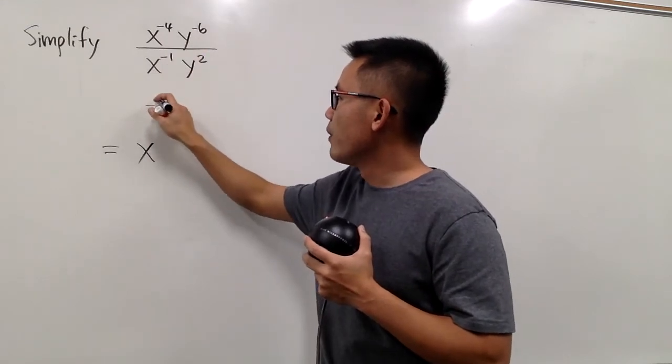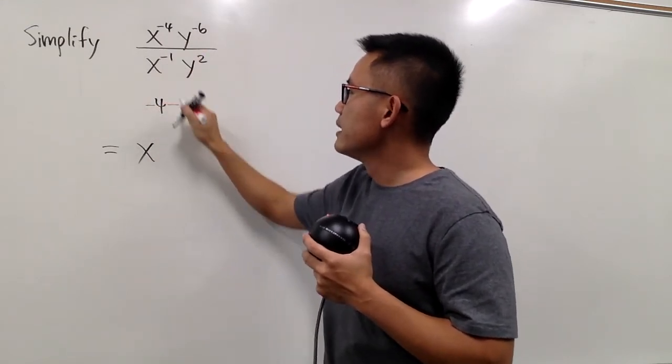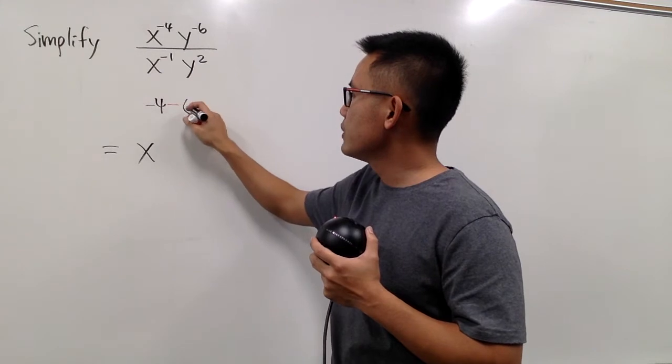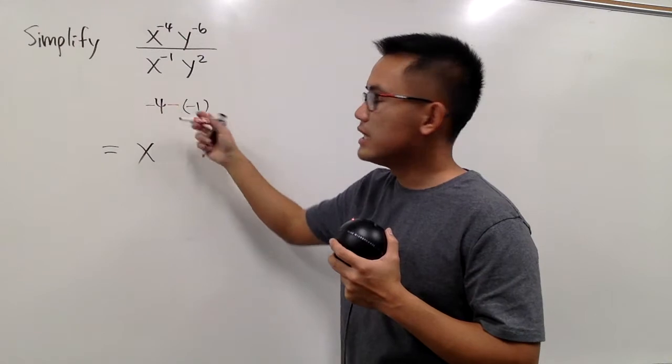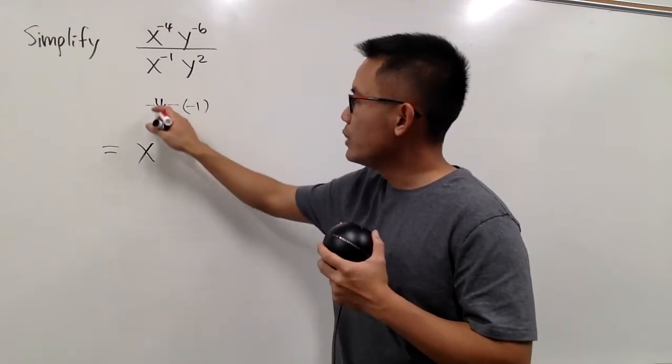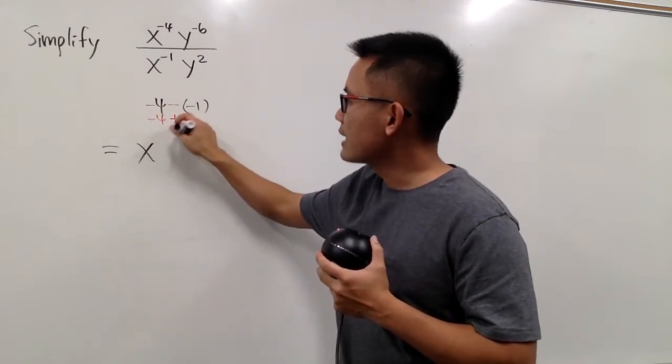Let me write it down as negative 4, and then we will minus the bottom exponent, which is negative 1. And as you can see, negative minus negative becomes plus, so really we have negative 4 plus 1.